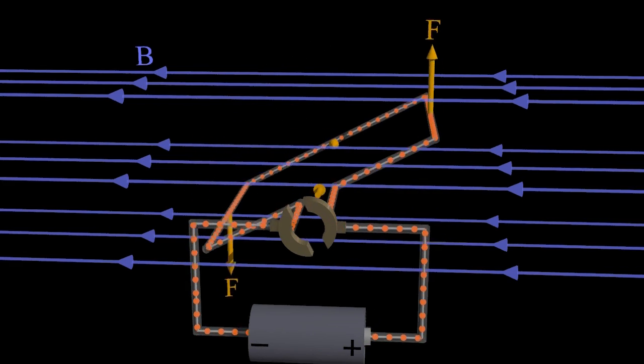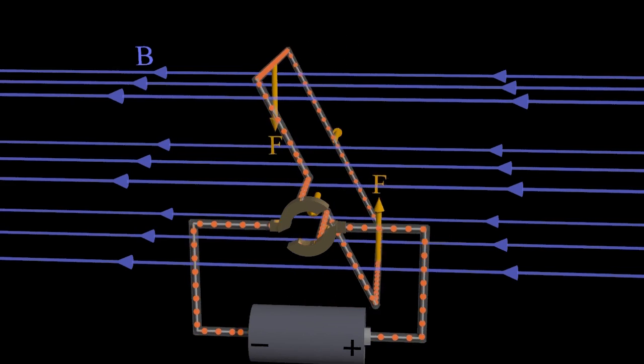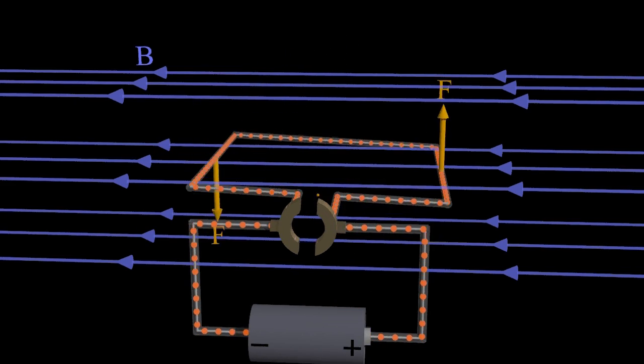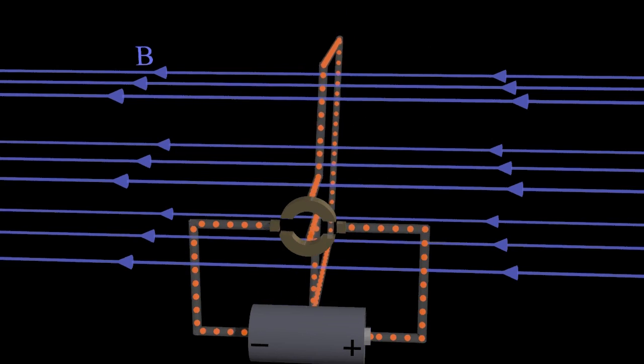A clever mechanical connection called a commutator allows the single direction battery to supply a current to the loop that switches direction every half rotation.